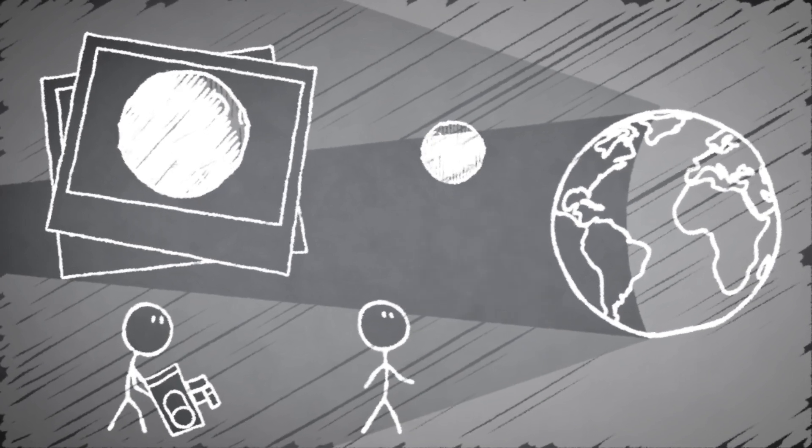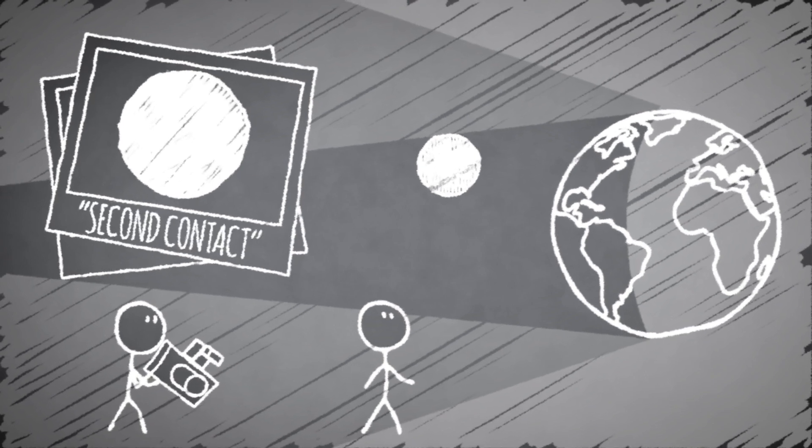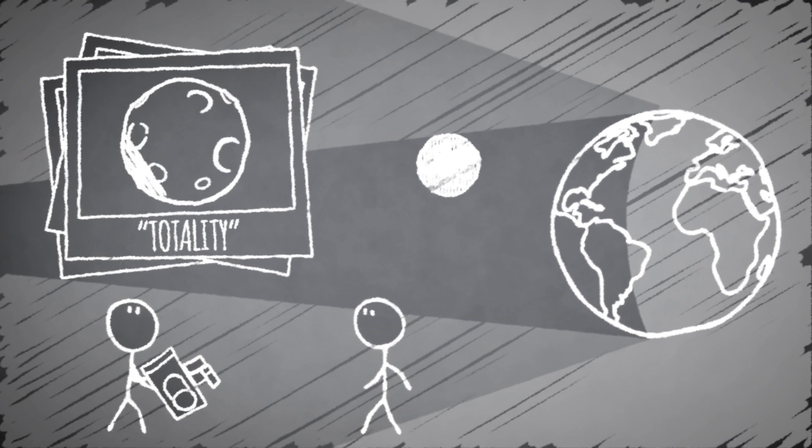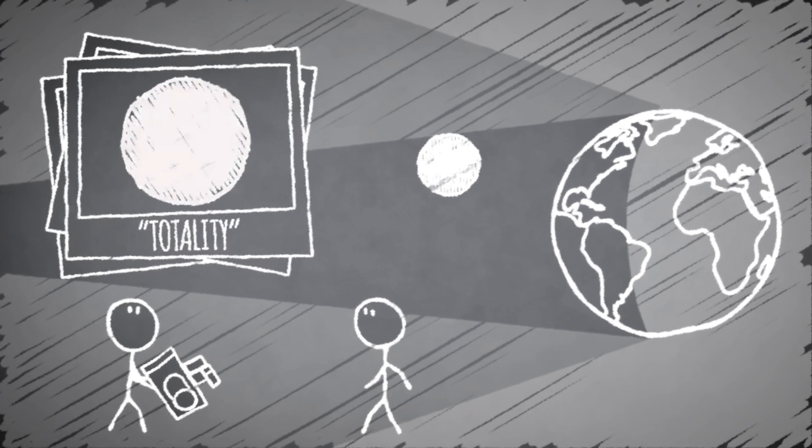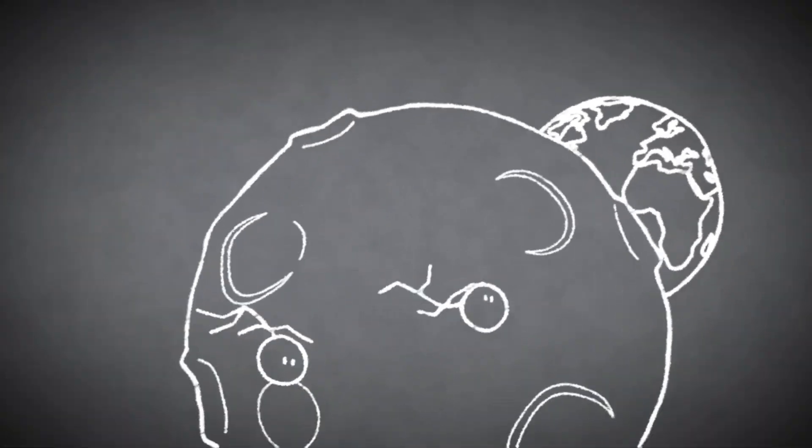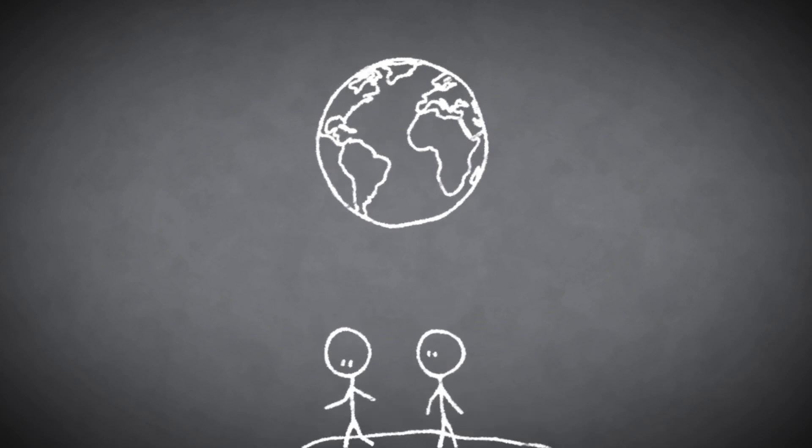The moment the entire disk of the moon is enveloped in the umbra is called second contact, and it marks the start of totality. This is when the moon is completely immersed in Earth's shadow and looks a deep coppery red. As observed from the moon, Earth would be surrounded by a ring of reddish light, the color of all the sunrises and sunsets happening at that moment.